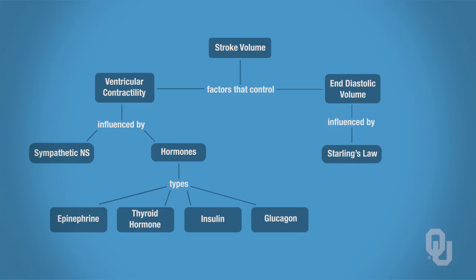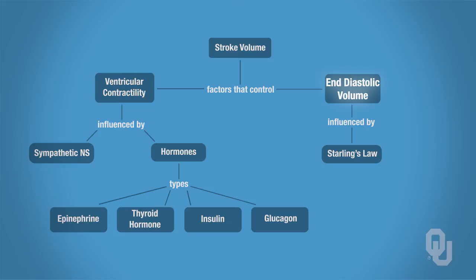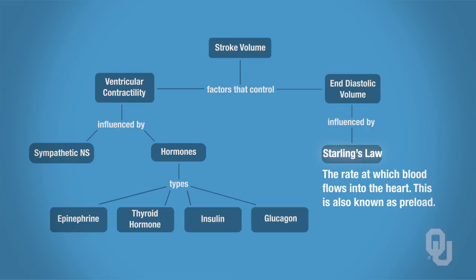Now let's focus on stroke volume, which is regulated by two factors: end diastolic volume and ventricular contractility. End diastolic volume is the maximum amount of blood in the ventricles before contraction. This is influenced by Starling's Law — the rate at which blood flows into the heart, sometimes referred to as preload. If you increase the rate of blood flow into the heart, you have increased venous return, which will increase end diastolic volume.